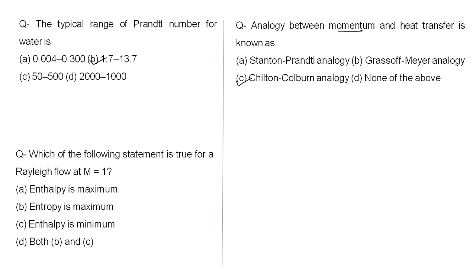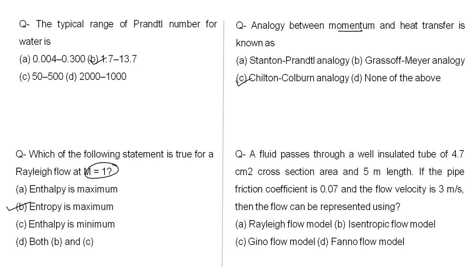Which of the following is true for Rayleigh flow at Mach number = 1? When Mach number is 1, the entropy of the system becomes maximum. Also, a fluid passing through a wall-insulated pipe with given cross-section area, length, and friction coefficient can be represented using the Fanno flow model. Both are fact-based questions.